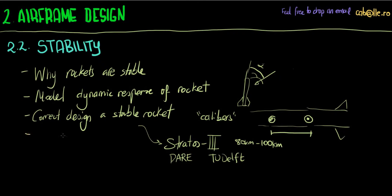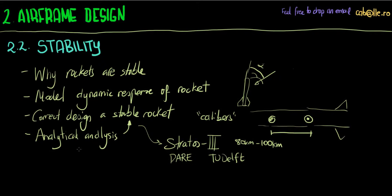With analytical analysis of the design parameters, we'll look at what it takes to create a stable rocket. This part is something I've derived, which I think is pretty interesting, and we can get really nice conclusions out of it — including conclusions about what may have happened to Stratus 3.